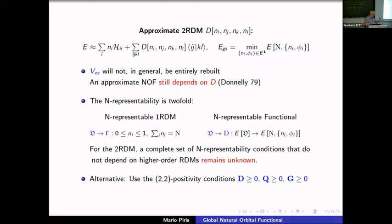We have not solved the problem from the beginning: the exact functional depends on the two-particle matrix, and any reconstruction must also be N-representable — you must demonstrate there exists some wave function, possibly approximate, justifying the functional. For the two-RDM, the complete set of N-representability conditions that do not depend on higher-order density matrices remains unknown.